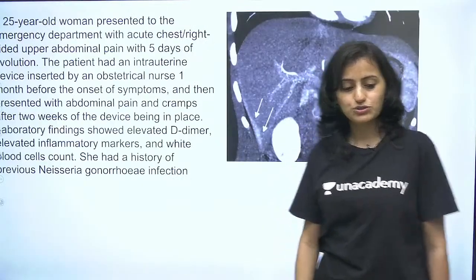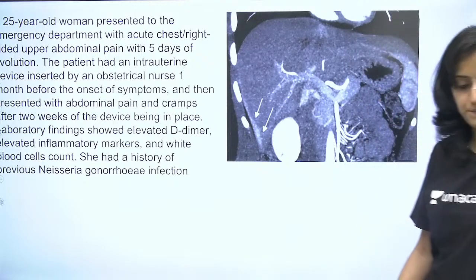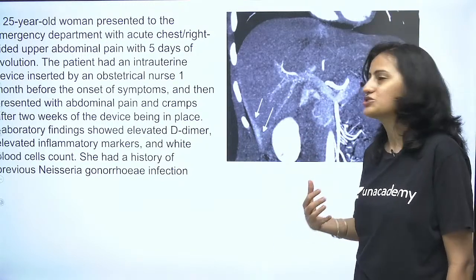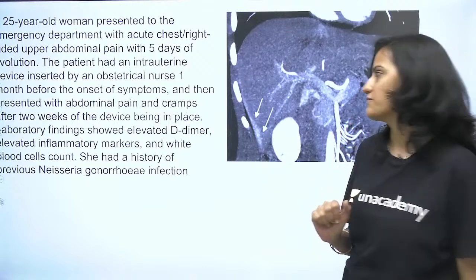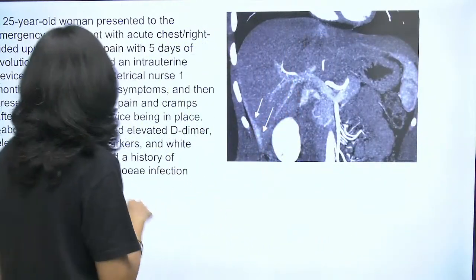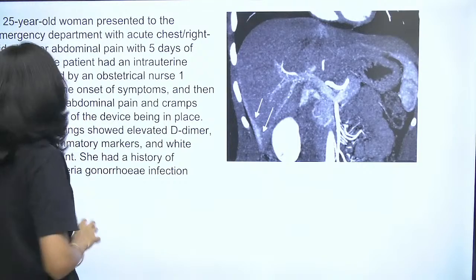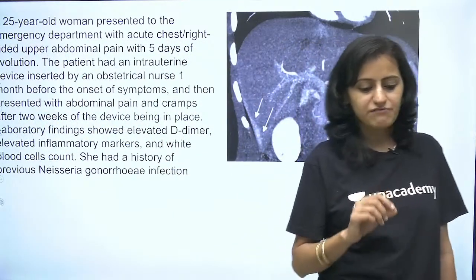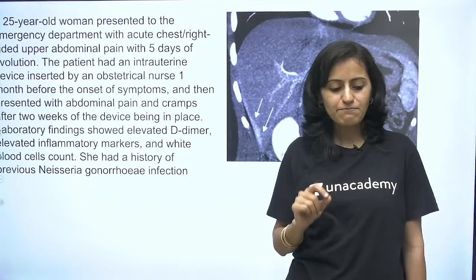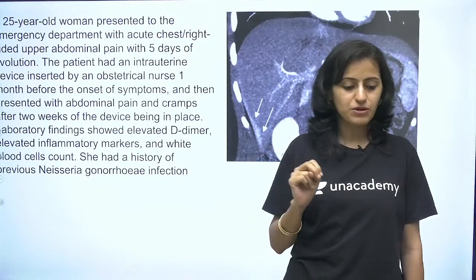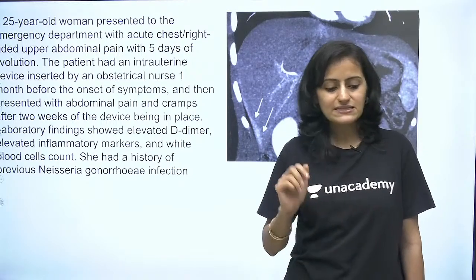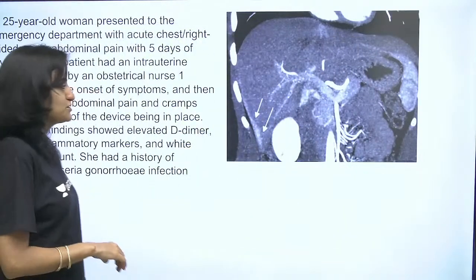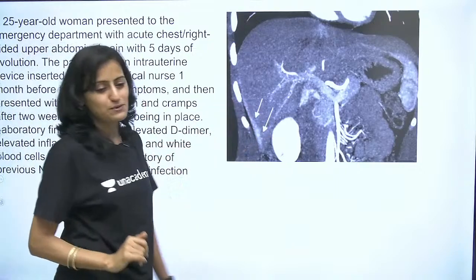Moving to the next case. A 25-year-old woman presented to the emergency department with acute chest or right-sided abdominal pain with five days of evolution. The patient had an IUCD inserted by an obstetrical nurse one month before onset of symptoms, then presented with abdominal pain and cramps after two weeks. Lab findings show elevated D-dimer, elevated inflammatory markers, and raised WBCs. She has a history of previous Neisseria gonorrhea infection. What is the diagnosis based on this image?